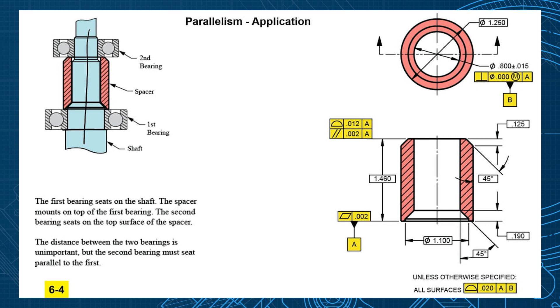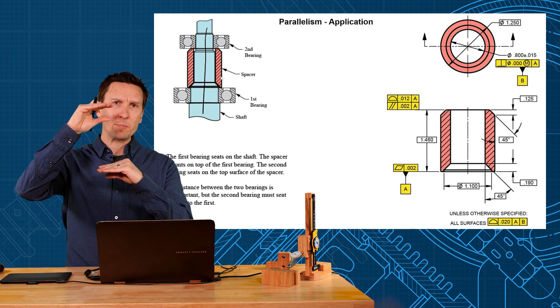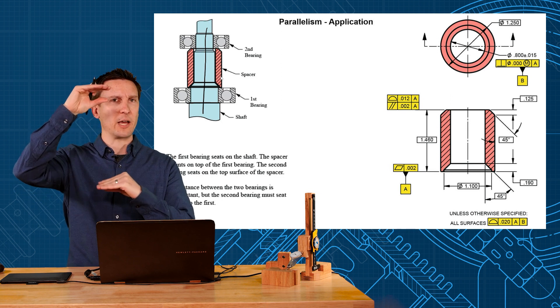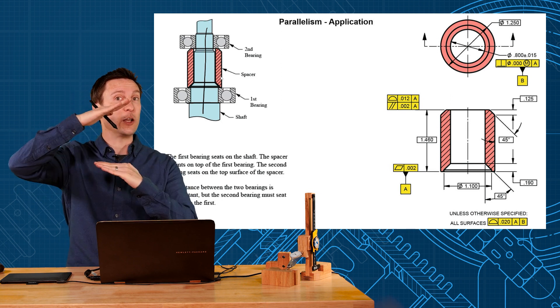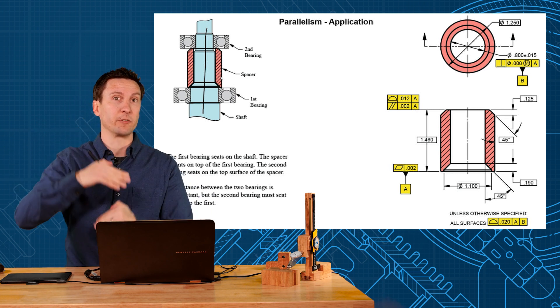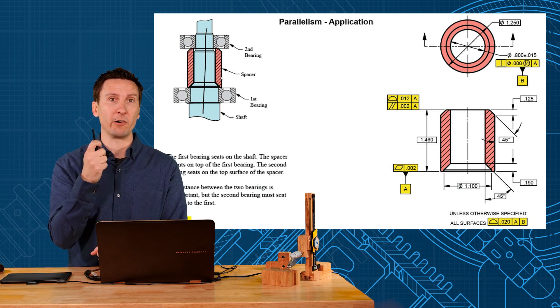Then a bearing spacer shown in red is going to sit on top of that first bearing and space out where that second bearing is going to be. Now the spacing between the bearings is not that critical. As you can imagine, the orientation, the parallelism of these bearings is real important for the bearings to run right.